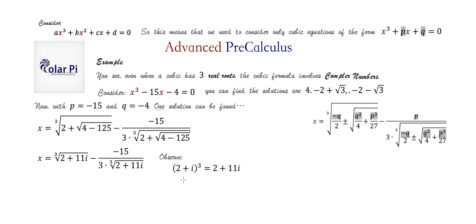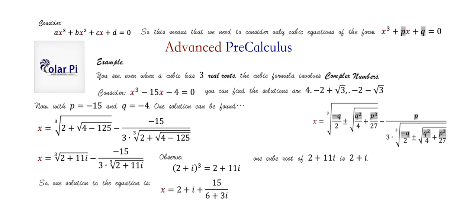Using the cube root (2 + i), we substitute it in place of the cube root of (2 + 11i). Multiplying by 3 gives (6 + 3i). Simplifying this part — multiplying numerator and denominator by the conjugate — look at what we get.